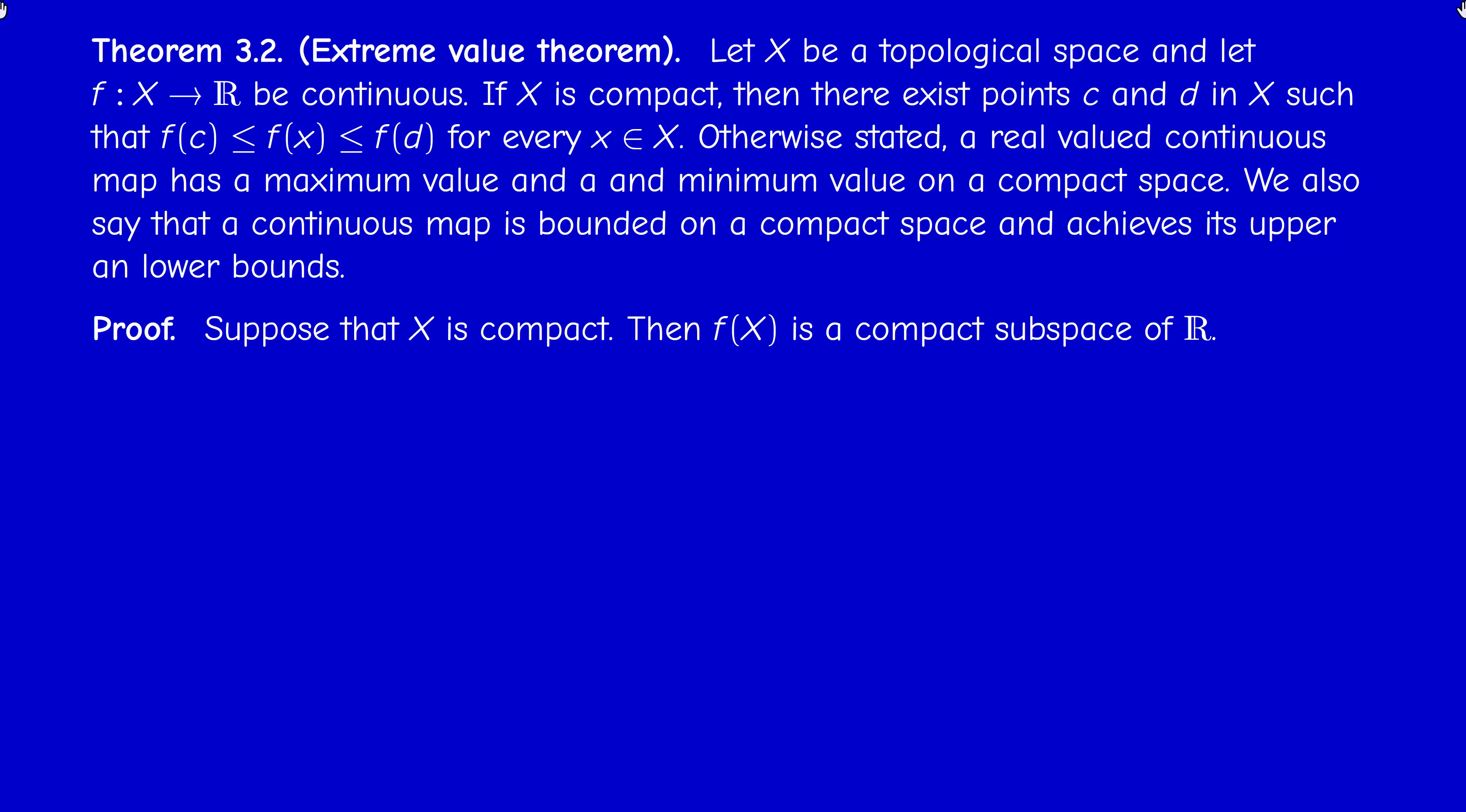This is a consequence of just the previous results. So if X is compact, according to the previous result, f(X) is compact. But it's a compact subset of R. But we said that R is a metric space, and so f(X) is a compact metric space and therefore it's bounded. And it's closed as well because we know that compact sets of a metric space are closed. So f(X) is both closed and bounded.